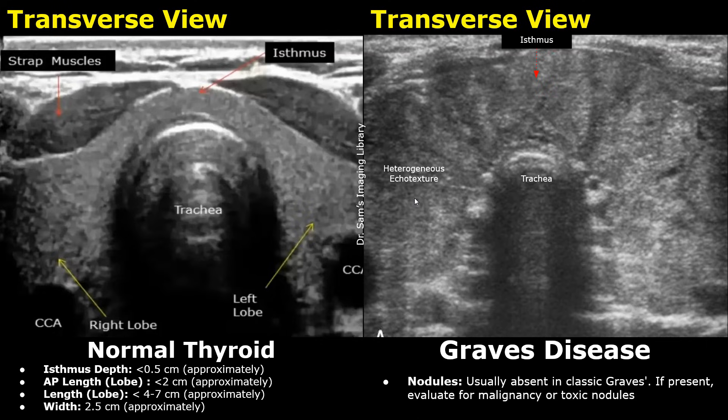Nodules are usually absent in classic Graves' disease, but if they are present, it is important to rule out malignancy or toxic nodules. This absence of nodules can be helpful in distinguishing it from Hashimoto's thyroiditis. Hashimoto's thyroiditis and Graves' disease have some overlapping features on ultrasound, but a nodular appearance is more common in Hashimoto's. Of course, we correlate these ultrasound findings with lab findings, which help in differentiating between Graves' disease and Hashimoto's thyroiditis.